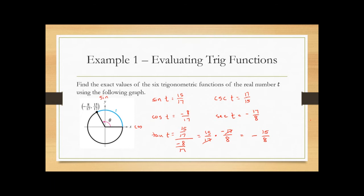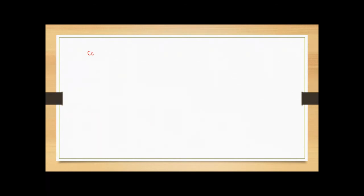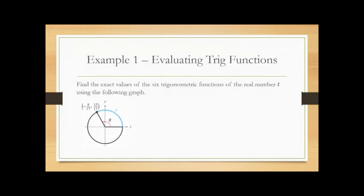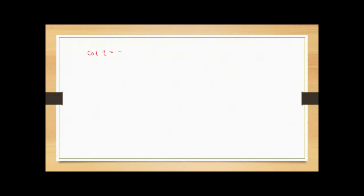And cotangent is the reciprocal of tangent. Since tangent was -15/8, cotangent is -8/15.